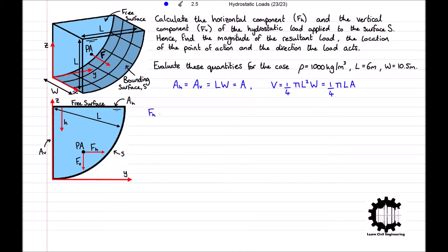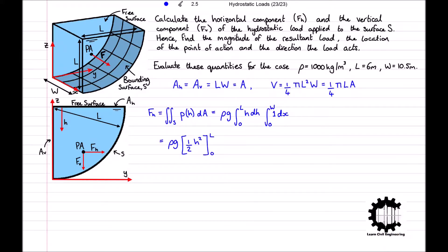Starting with FH, FH equals the surface integral of pressure relative to the H coordinate with respect to A. Since the liquid is homogeneous and static, substituting the pressure distribution P equals rho GH and factoring rho G out gives FH equals rho G times the integral of H with respect to H from zero to L, times the integral of 1 with respect to x from zero to W. Evaluating these integrals and substituting the boundary limits gives rho G times one half L squared W. Since the area of the vertical surface is LW, we can rewrite this as FH equals one half rho G LA.